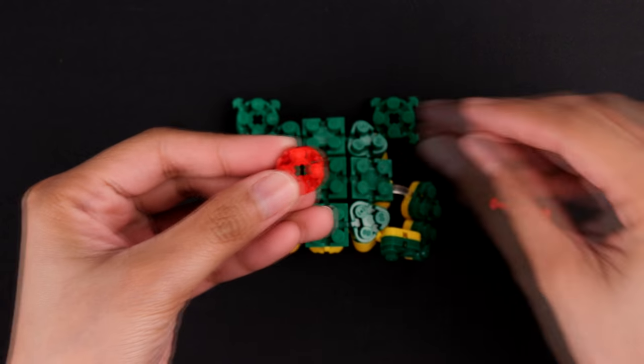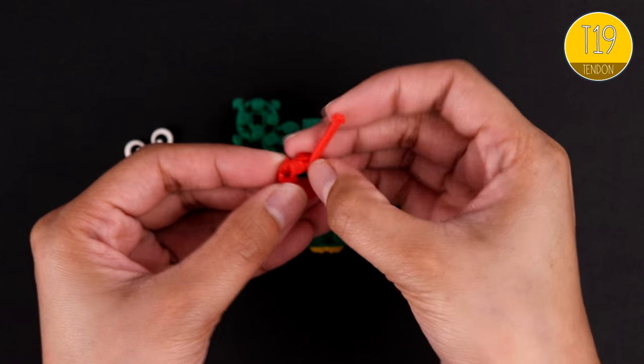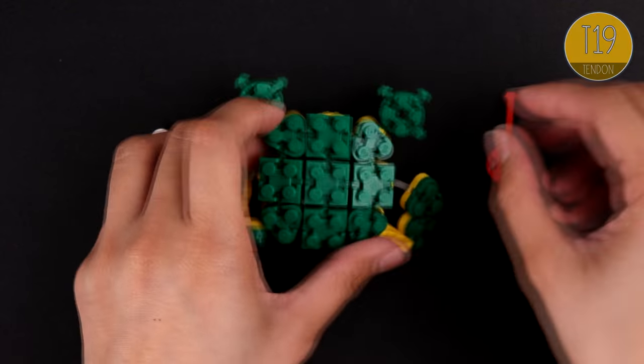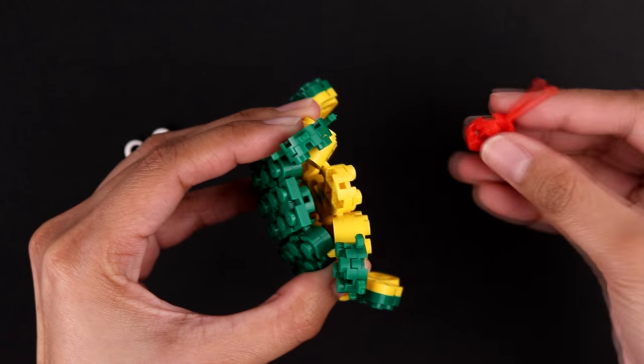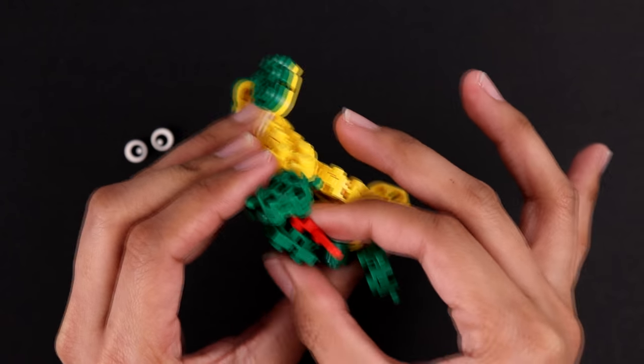Time for the final pieces. Our toad needs a tongue and some eyes. We're going to connect a circle and a T19 tendon. We're then going to open the mouth and clip the circle brick inside.